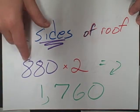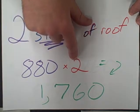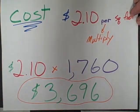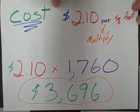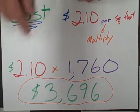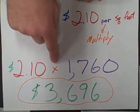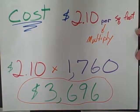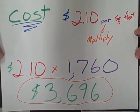The cost is going to be $2.10 per square foot. 'Per' means to multiply—each square foot of roofing is going to be $2.10. So $2.10 times 1,760 square feet for a grand total of $3,696.